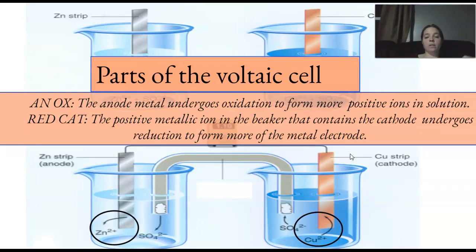All right, well, here's what I was telling you about, anox, red cat. Anode metal undergoes oxidation to form more positive ions in solution. So, you get more positives in here.